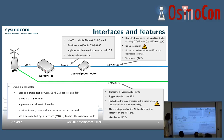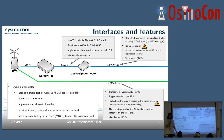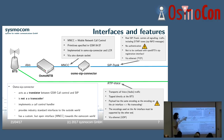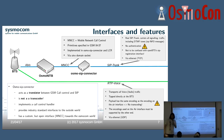The osmo-sip-connector is basically acting as a translating entity between the MNCC protocol and SIP. When the call control is processed, it interacts with the SIP trunk, translating the behavior on the GSM call-control side to the SIP trunk side.